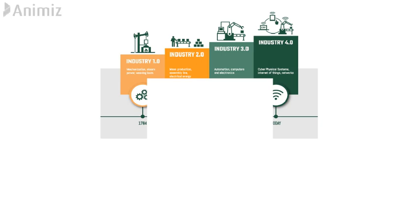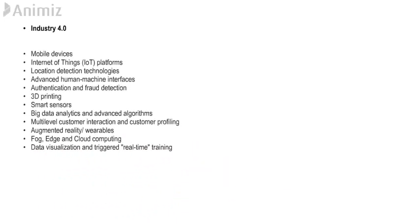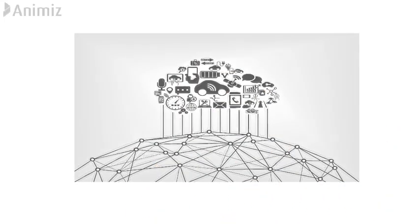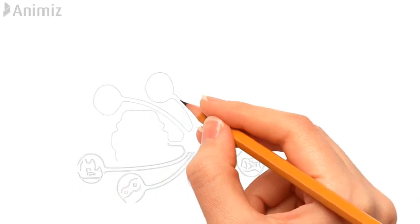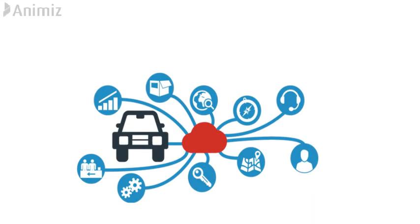What drives Industry 4.0? Mobile devices, the Internet of Things, IoT platforms, location detection technologies like GPS, advanced human-machine interfaces, authentication and fraud detection like fingerprint and ID scanners, 3D printing, smart sensors, big data analytics and advanced algorithms, multi-level customer interaction and profiling, augmented reality, virtual reality, wearables, cloud computing, data visualization, and real-time training. For example, a connected car brings all these capabilities together — tracking, keyless entry, device details — all in one place with cloud computing.